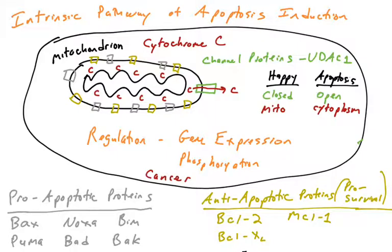Cytochrome C exits the mitochondria through channel proteins such as VDAC1. Many proteins associated with the mitochondrial outer membrane regulate VDAC1 channels — the pro-apoptotic proteins and the anti-apoptotic proteins. They battle over this channel. And if apoptosis is being triggered, it's because the pro-apoptotic proteins either increase in expression or activity, and they allow the channel to open.